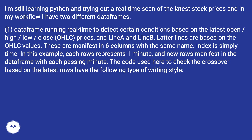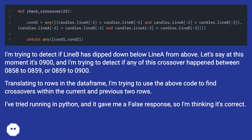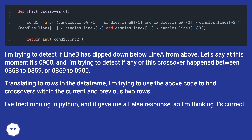The code used here to check the crossover based on the latest rows has the following type of writing style. I'm trying to detect if lenapp has dipped down below linear from above. For example, at this moment it's 09:00, and I'm trying to detect if any crossover happened between 08:58 to 08:59 or 08:59 to 09:00 — translating to the current and previous two rows in the dataframe.